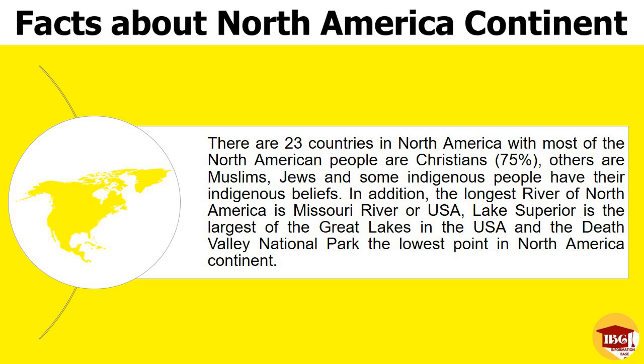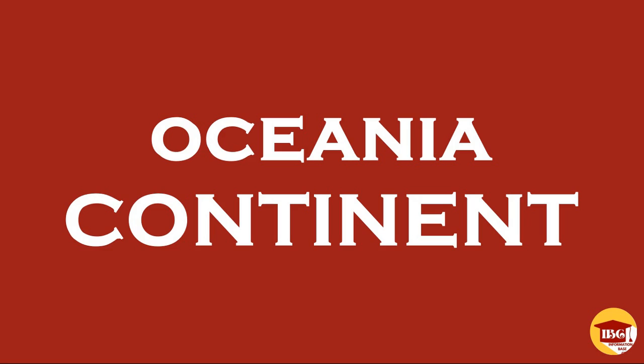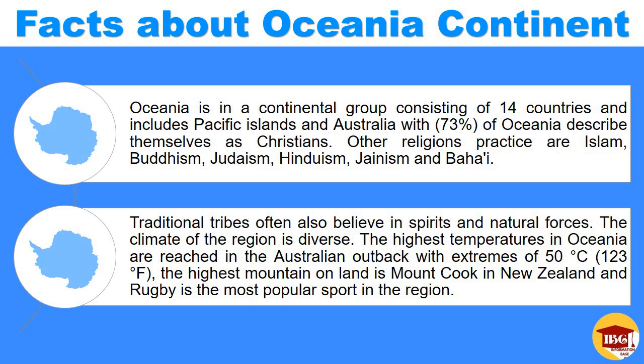In addition, the longest river of North America is the Missouri River in the USA. Lake Superior is the largest of the Great Lakes in the USA, and Death Valley National Park is the lowest point in North America continent. The continent of Oceania, also known as Australia, was the sixth continent in the world. Oceania is a continental group consisting of 14 countries and includes Pacific Islands and Australia, with 73% of Oceania describing themselves as Christians.